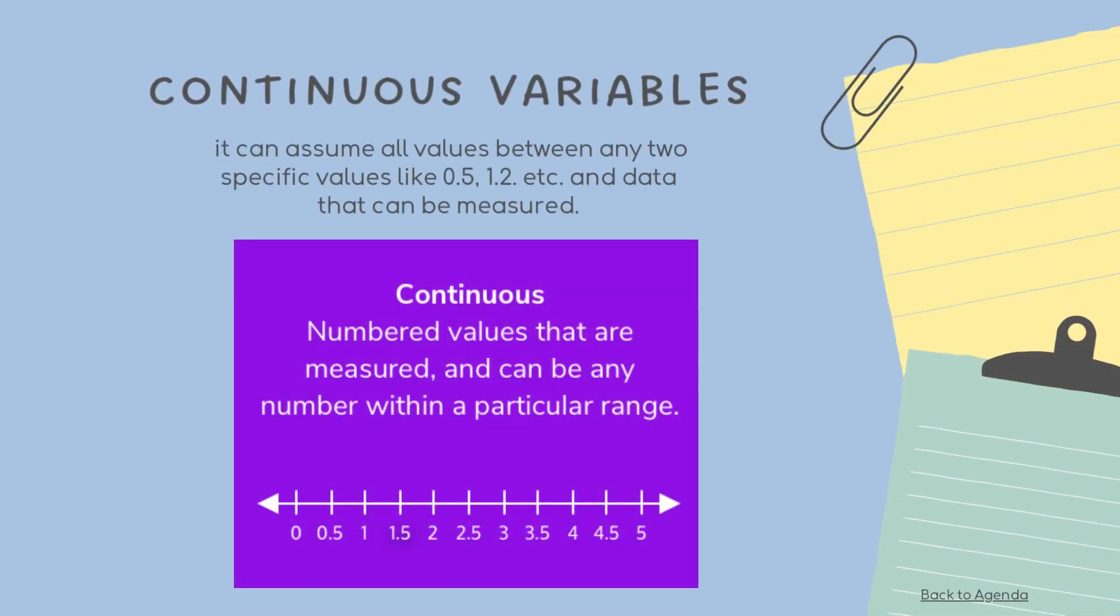Next is the continuous variable. It can assume all values between any two specific values like 0.5, 1.2, etc. and data that can be measured. A continuous variable is defined as a variable which can take an accountable set of values or infinite set of values. For instance, if a variable over a non-empty range of the real numbers is continuous, then it can take on any value in that range. Examples are weight, height, or temperature.